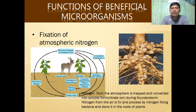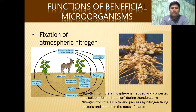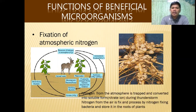So what are the functions of beneficial microorganisms? First, fixation of atmospheric nitrogen. Nitrogen from the atmosphere is trapped and converted into soluble form during thunderstorms, and nitrogen from the air is fixed and processed by nitrogen-fixing bacteria, then stored in the roots of plants, as you have seen in the picture.